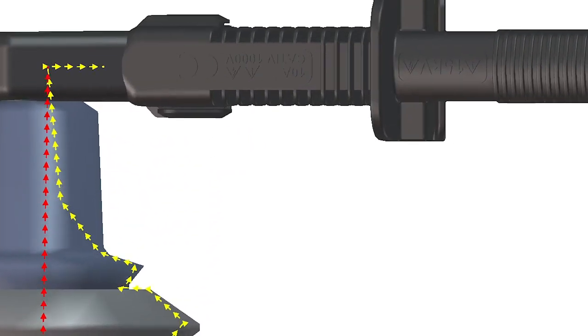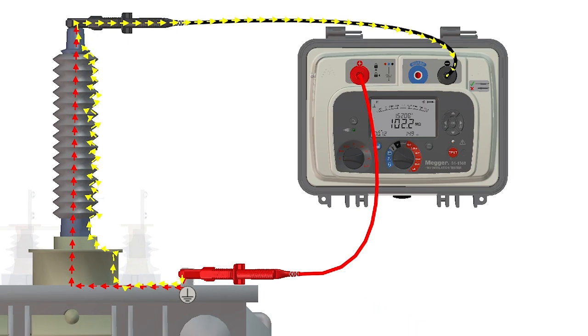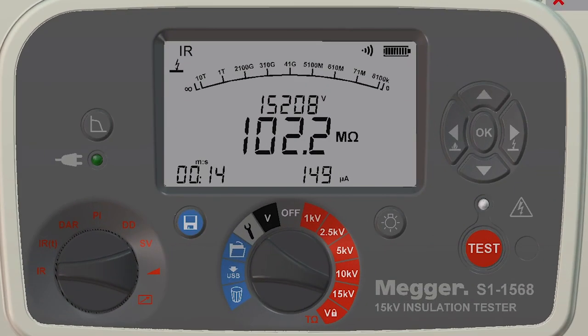In the diagram you can see that the insulation leakage combines with the surface leakage at the top of the bushing. This combined current is returned to the test instrument, providing a false low insulation resistance value.